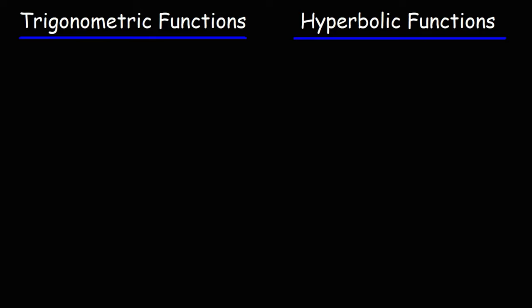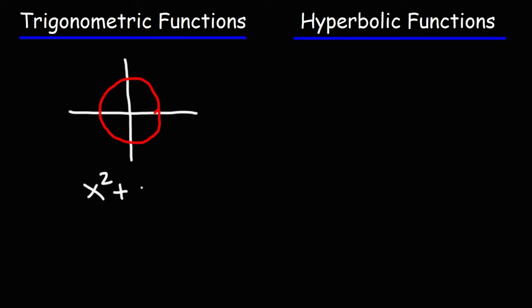In this video, we're going to talk about hyperbolic functions, and let's compare it with trigonometric functions. Trigonometric functions are based on the unit circle. The formula for that is x squared plus y squared is equal to 1. That is the equation of a circle where the radius has a value of 1, that's why it's called a unit circle, since r is 1.